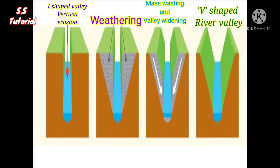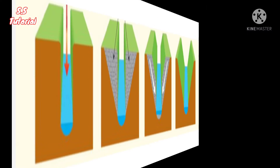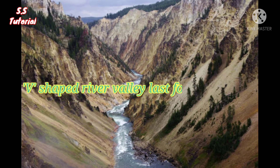Over time, weathering takes place in the upper part of the I-shaped river valley and it gets wider in the upper part. That's why the I-shaped river valley turns into a V-shaped river valley. This V-shaped river valley lasts for a long time.